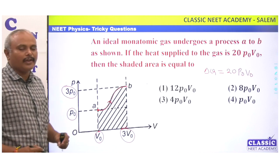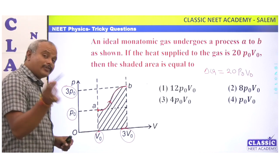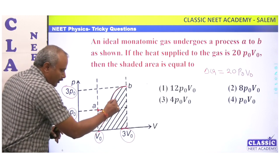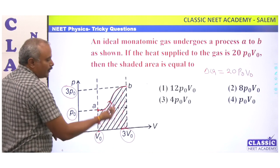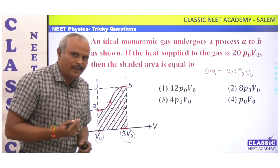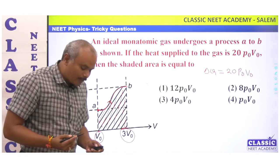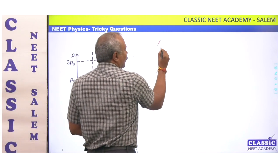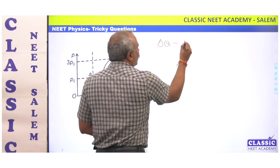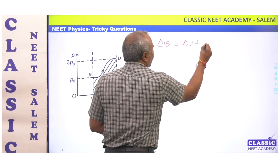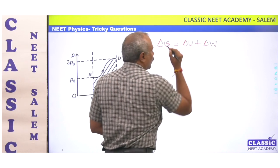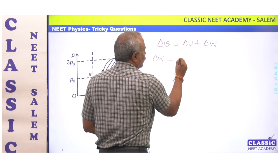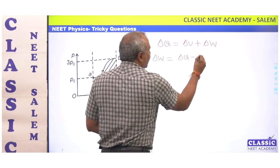The shaded area of the PV curve — that is, the area under the curve — represents the work done. This is the first key concept required. The area under the PV curve equals work done. From the first law of thermodynamics, work done W equals ΔQ minus ΔU.